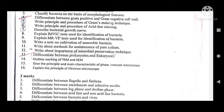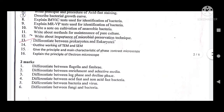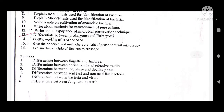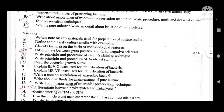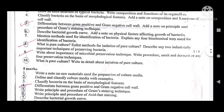The seventh five-mark question: describe the bacterial growth curve. Eighth: explain IMVIC tests used for identification of bacteria. Ninth: MRVP test — also very important. Tenth: write a note on cultivation of anaerobic bacteria. Write about methods for maintenance of pure culture and the importance of microbial preservation techniques. Differences between prokaryote and eukaryote — very important. Outline the working of TEM and SEM. Give the principle and main characteristics of phase contrast microscopy. The sixteenth: explain the principle of electron microscope.